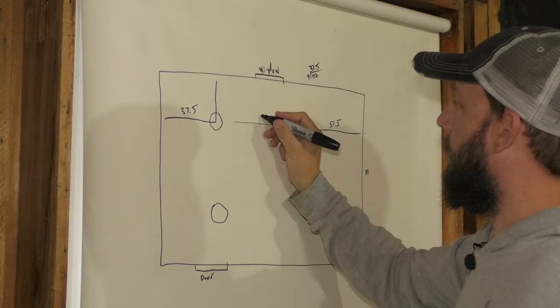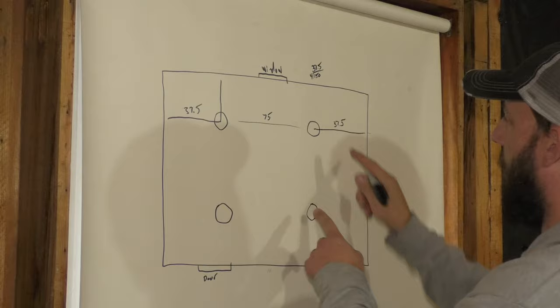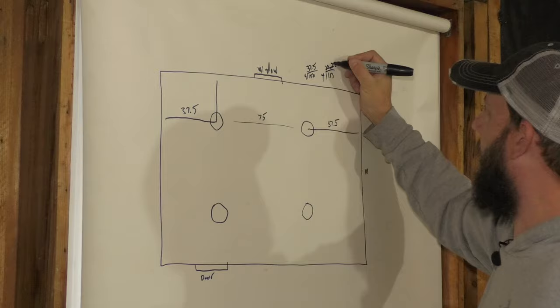The same goes for this wall. 113. You divide that by the number of lights in this row times two. So four. 113 divided by four, 28.25 or 28 and a quarter.